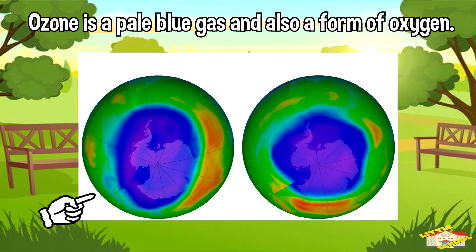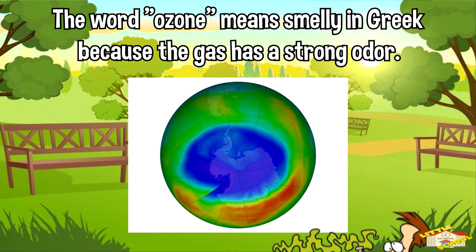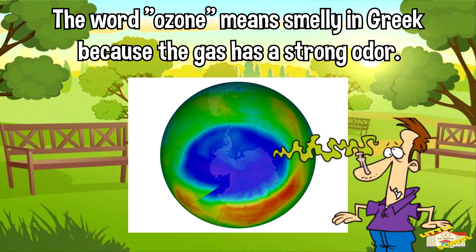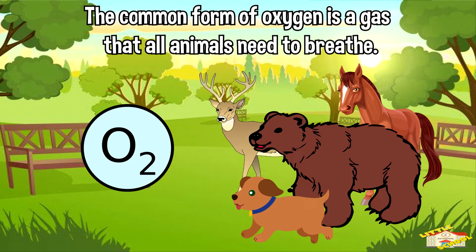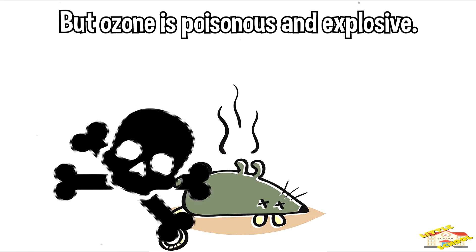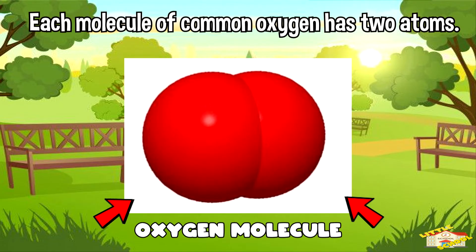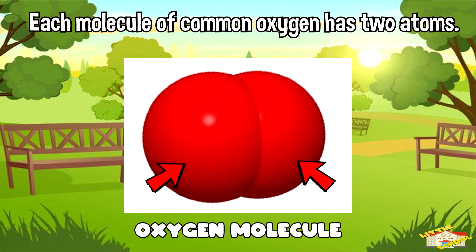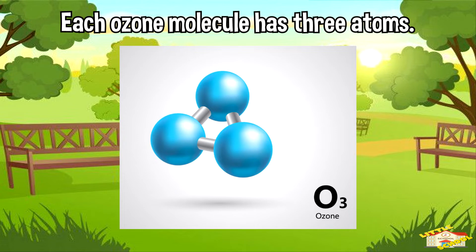Ozone is a pale blue gas and also a form of oxygen. The word ozone means 'smelly' in Greek because the gas has a strong odor. The common form of oxygen is a gas that all animals need to breathe, but ozone is poisonous and explosive. Each molecule of common oxygen has two atoms; each ozone molecule has three atoms.